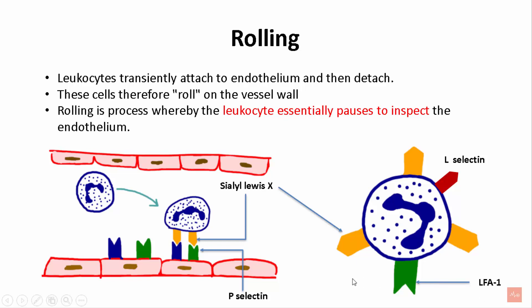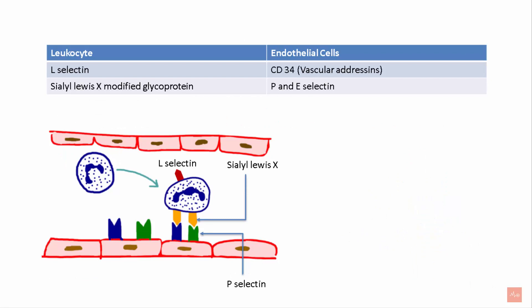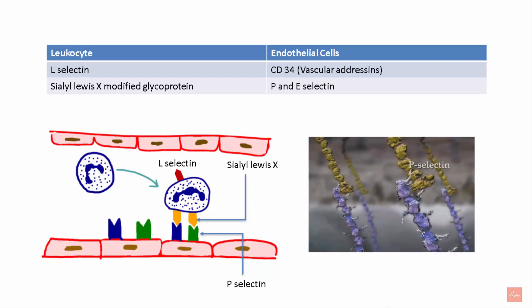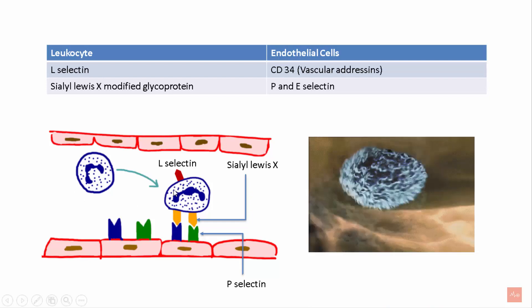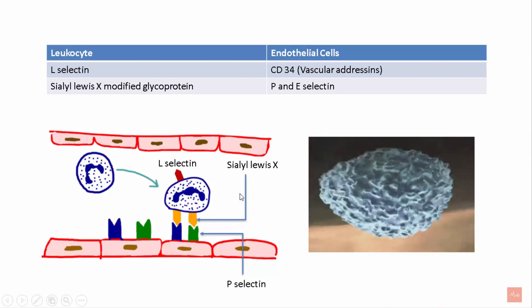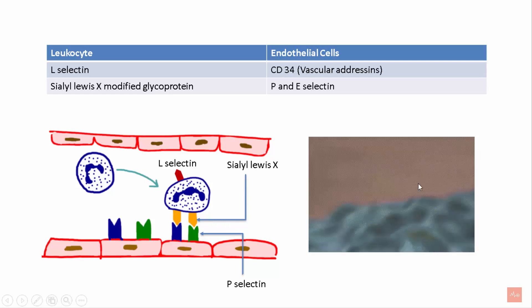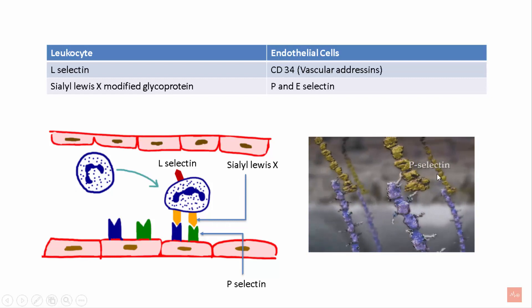In the case of rolling, there are also certain selectins released by the endothelium. The P-selectin molecule present on the endothelium attaches to the sialyl-Lewis-X molecule present on the neutrophils, which causes mild adhesion. The L-selectin attaches to the CD34 molecule present on the endothelial cells. As seen in this image, after rolling the PMNs come in contact with the P-selectins on the endothelium, causing them to slow in speed and roll over the endothelium.